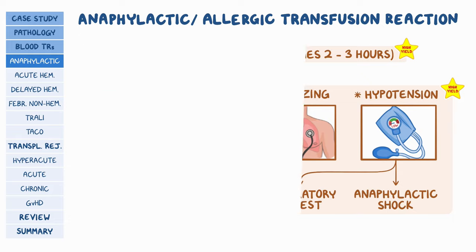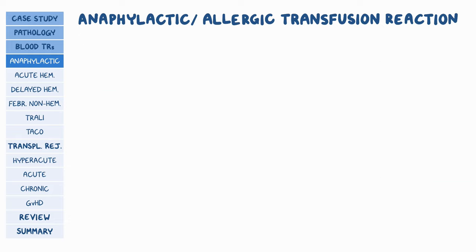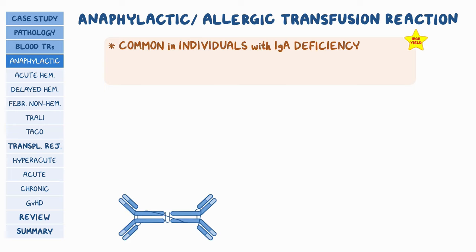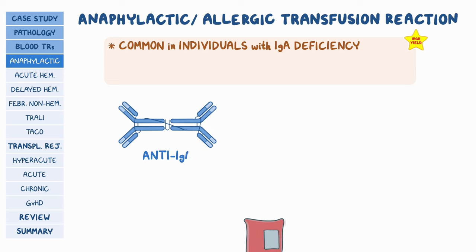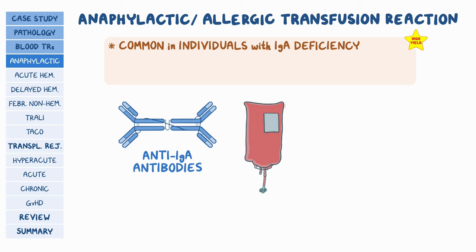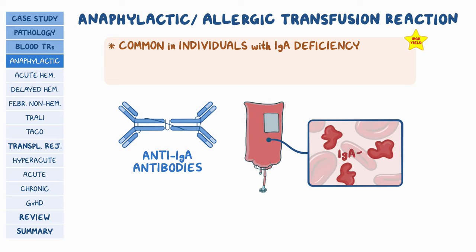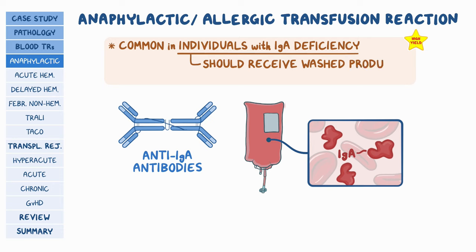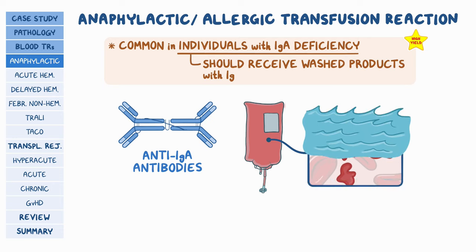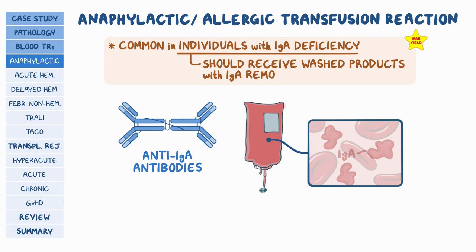Importantly, anaphylactic transfusion reaction commonly occurs in individuals with IgA deficiency because they have anti-IgA antibodies, and IgA is found in most blood products. Individuals with IgA deficiency should receive washed blood products from which IgA immunoglobulins have been removed.